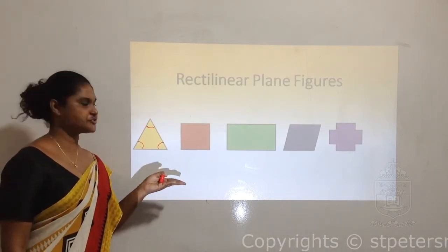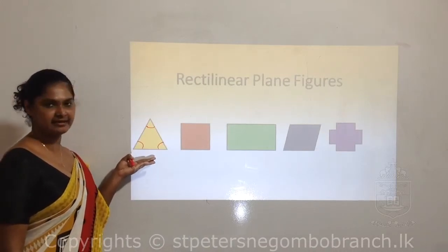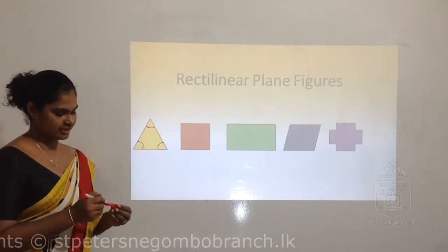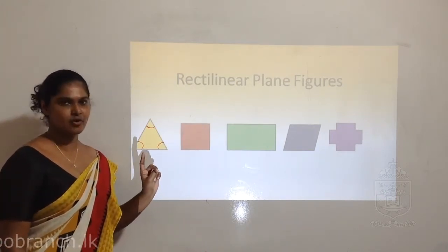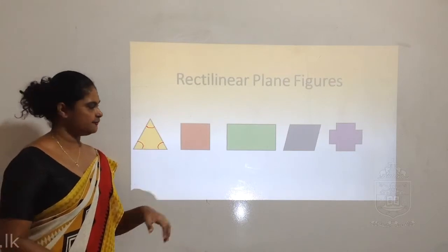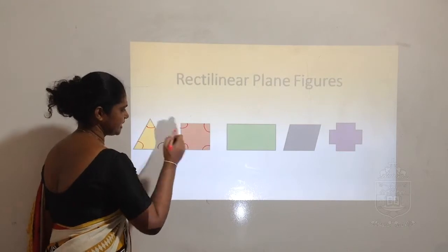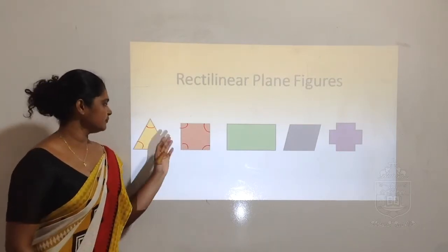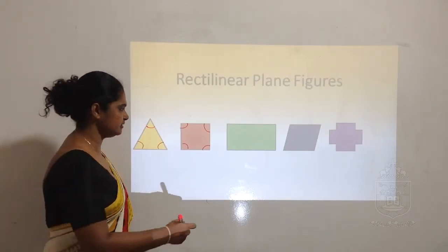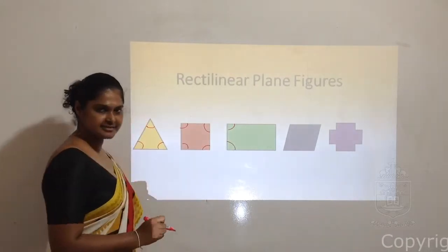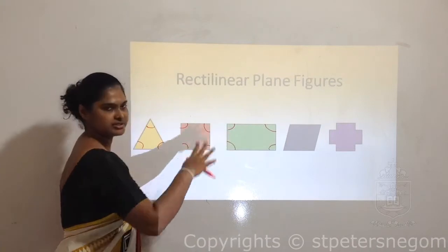That's why the name is triangle - 'tri' stands for three. That means three angles and there are three sides. Let's move on to the square. How many angles are here in the square? There are four angles and there are four sides. This is a rectangle - there are four angles and four sides. The rhombus is also having four angles and four sides.